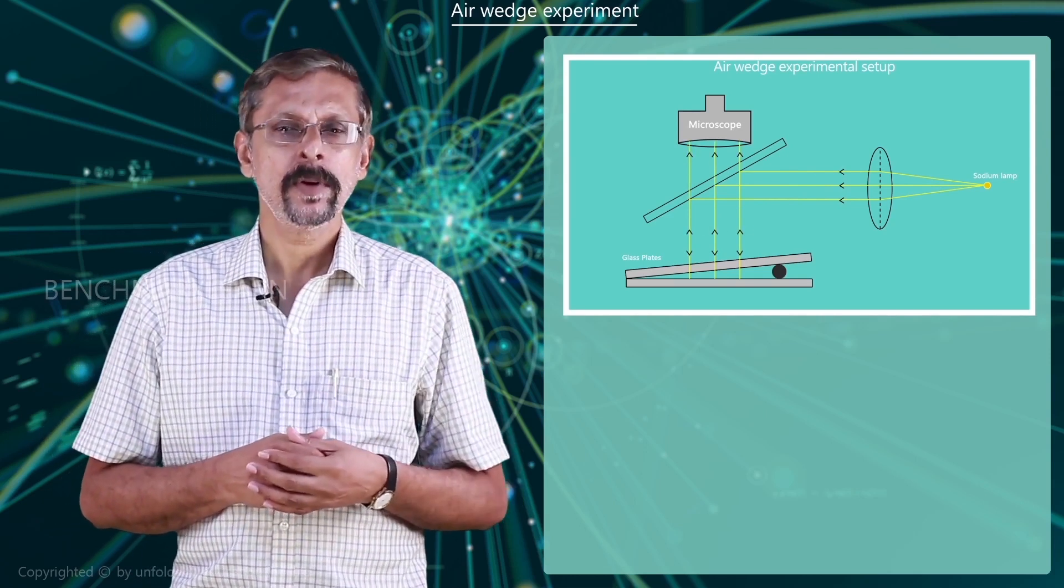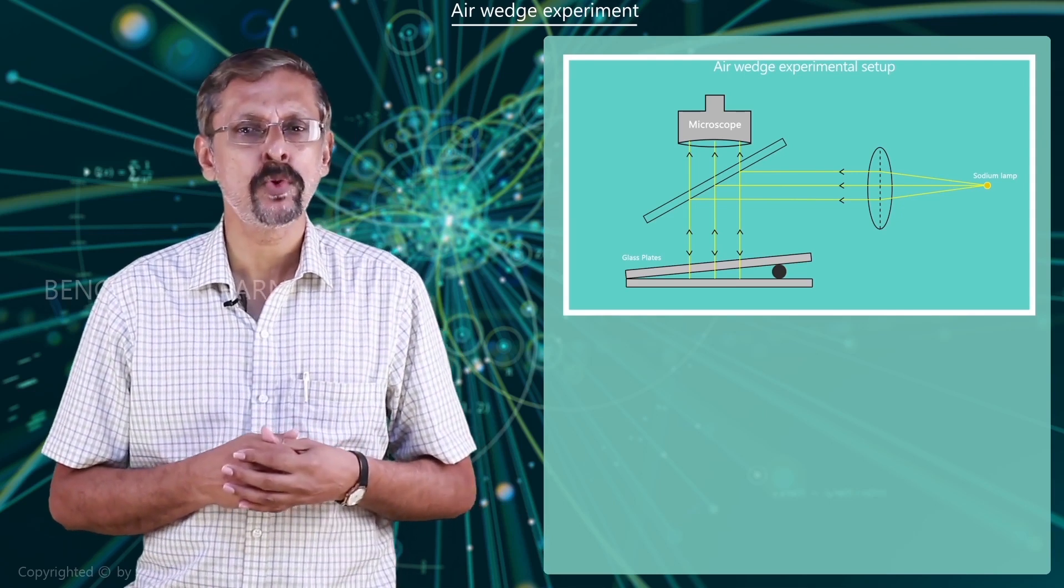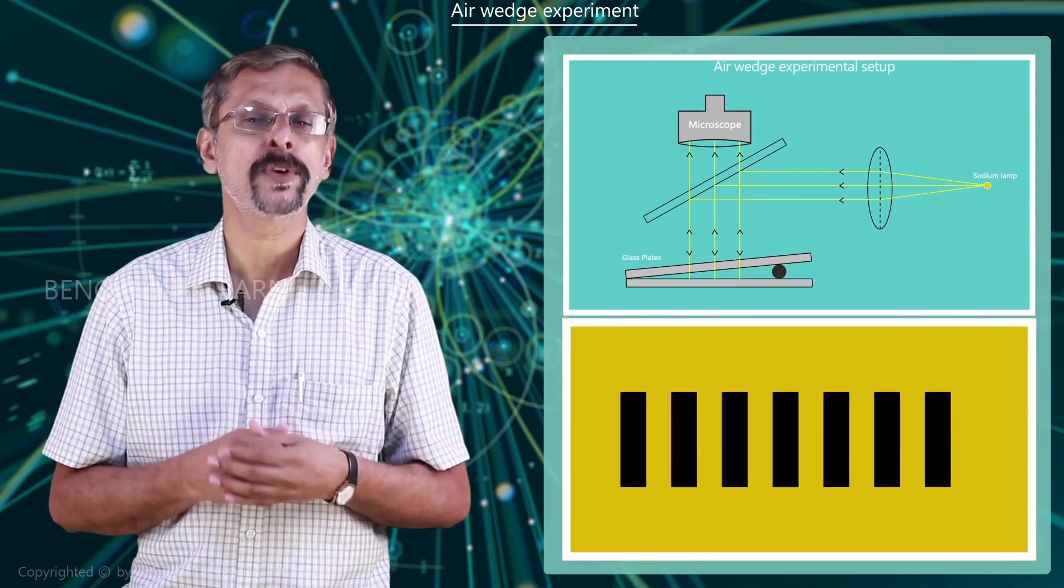The vernier microscope is arranged to focus the pattern of equally spaced dark and bright fringe pattern.